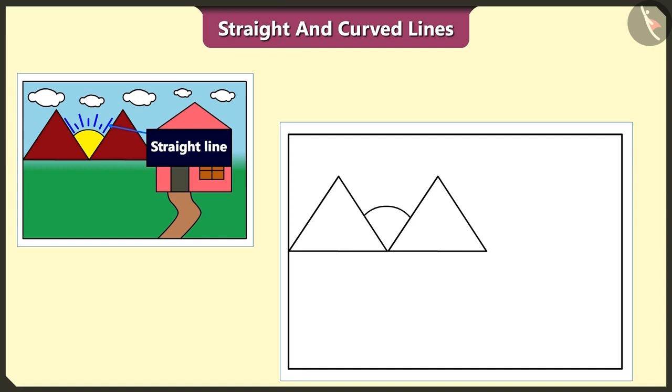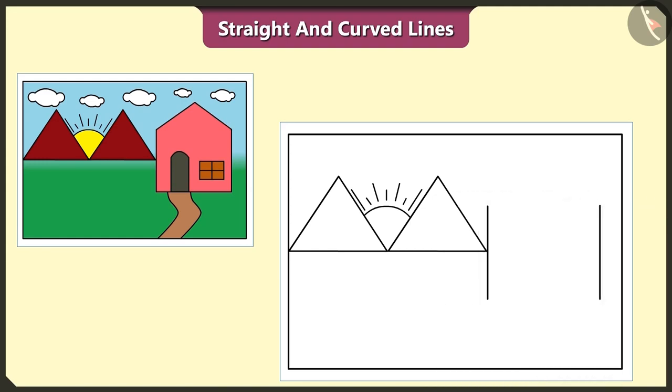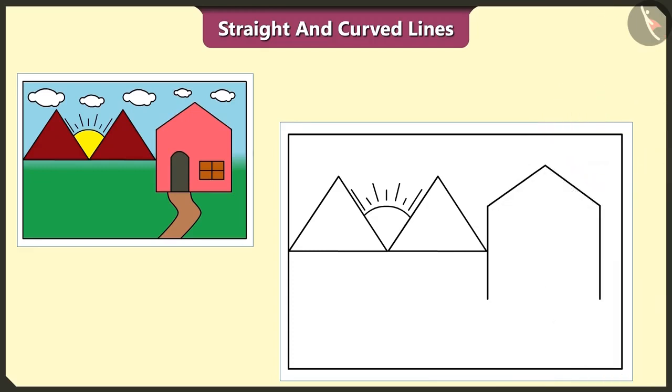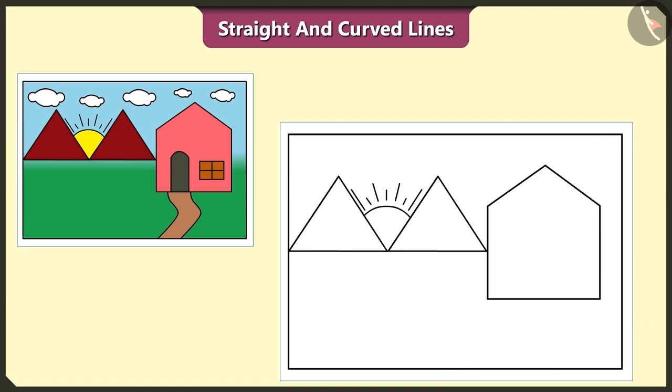And draw sun rays using straight lines like this. Yes, let's draw a house using both straight and curved lines. First of all, we have to draw two straight lines like this. Let's draw two more straight lines above these straight lines. Let's draw one more straight line at the base of these two straight lines.